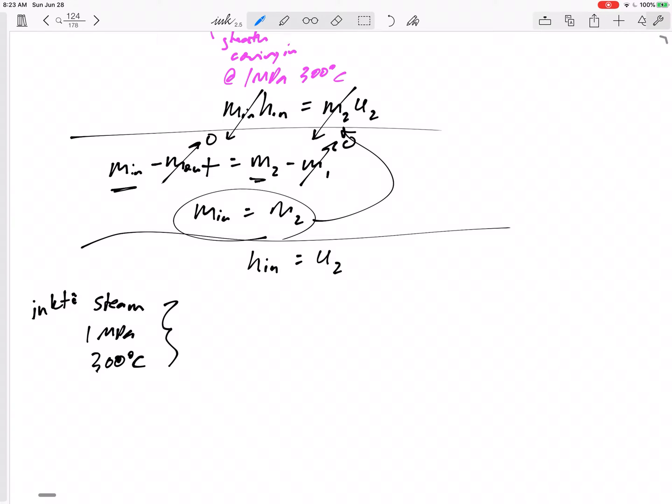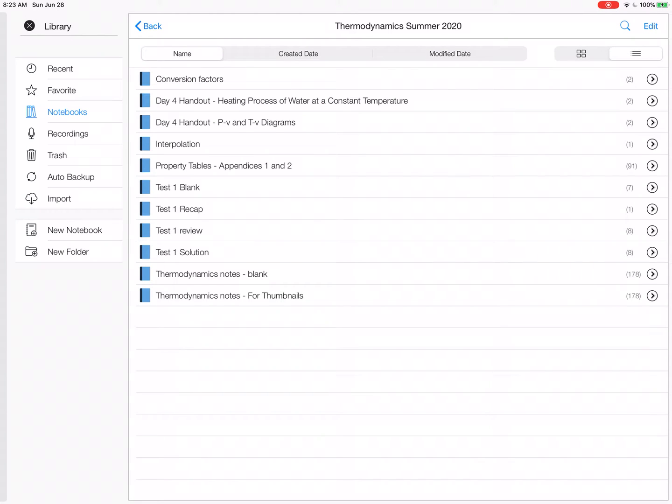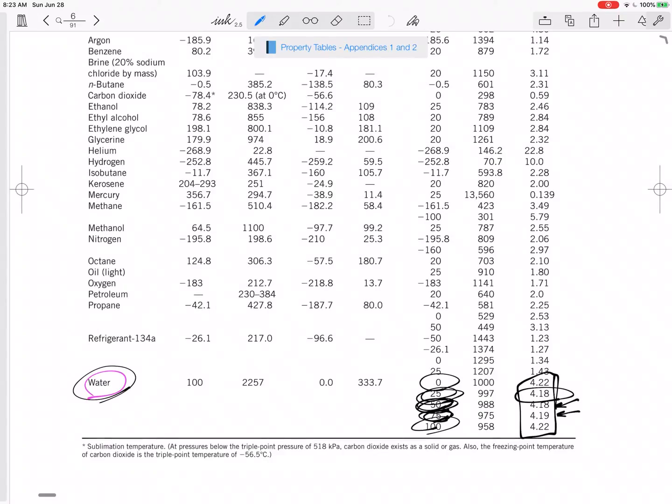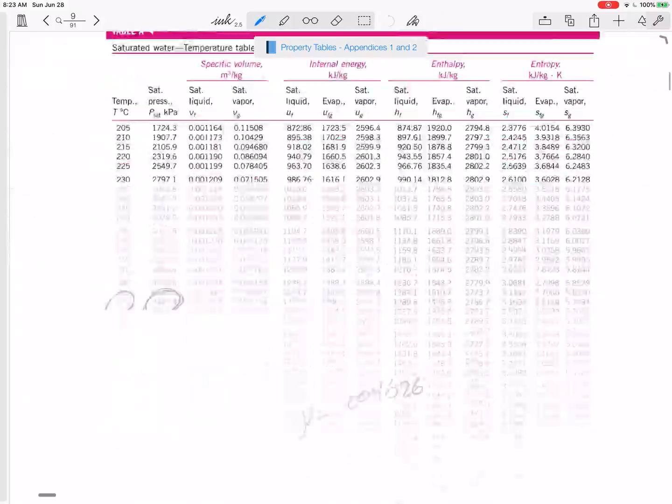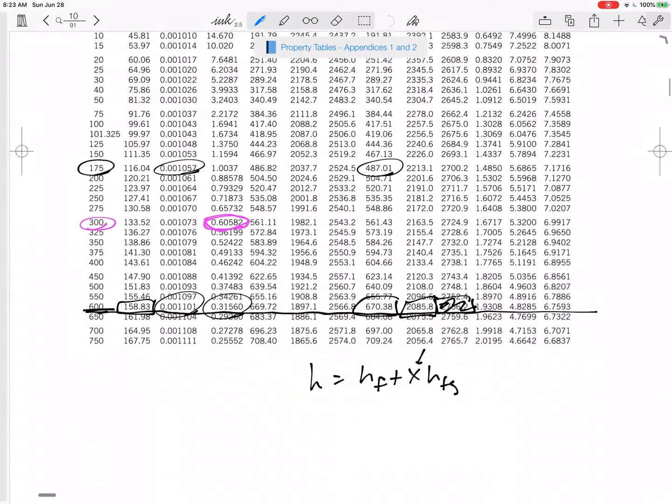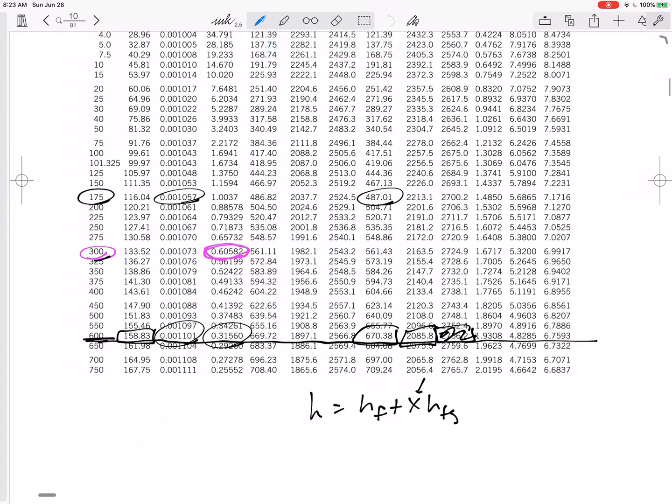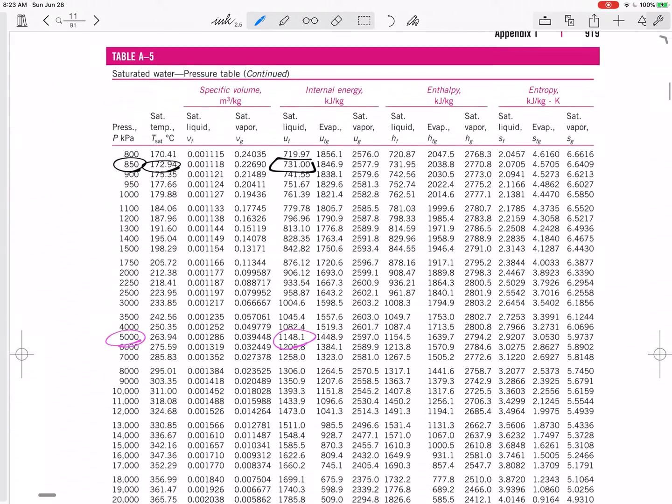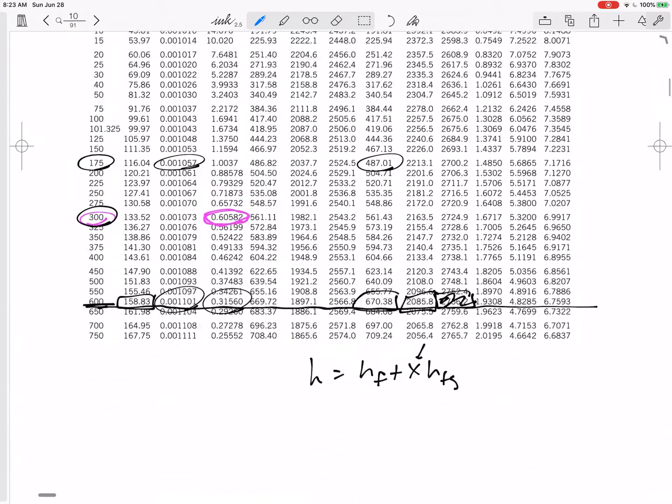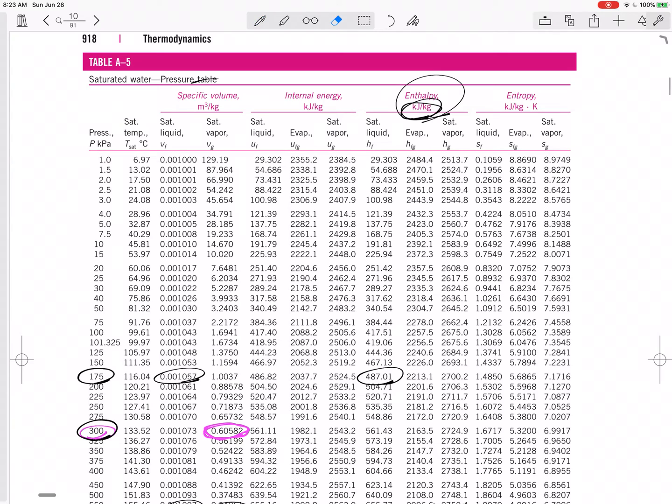I'm going to start at table A5. Let's see where we start. I like to start at table A5. Property tables, start at table A5 for a pressure of 1 MPa, which would be 1,000 kPa.